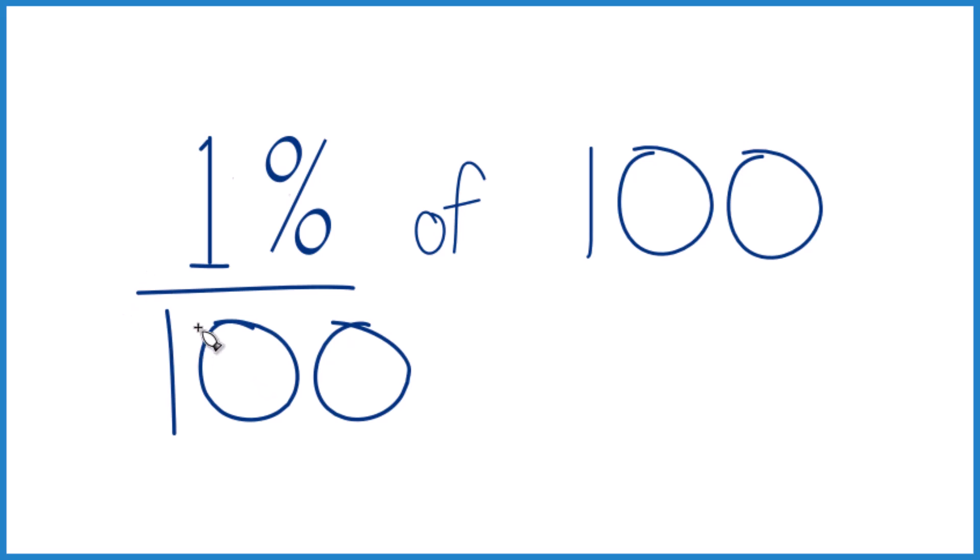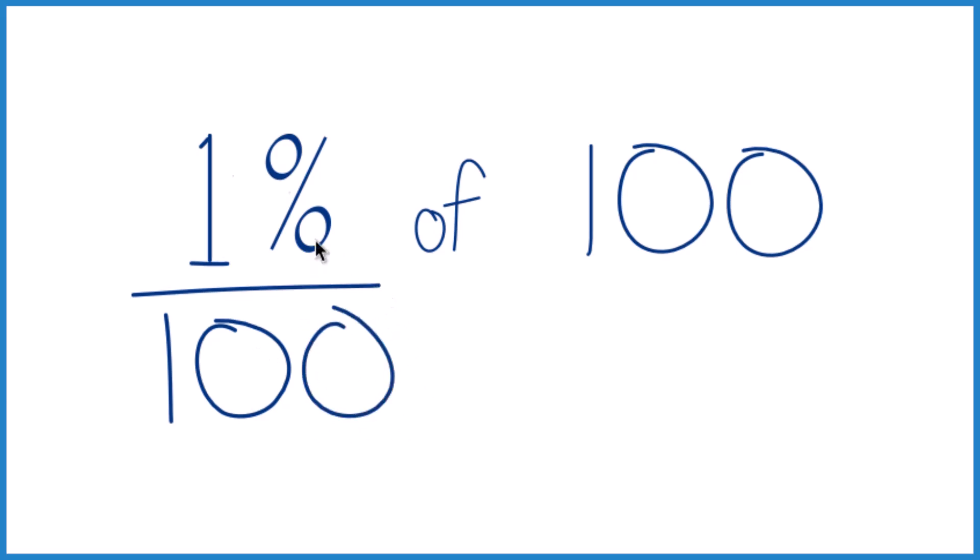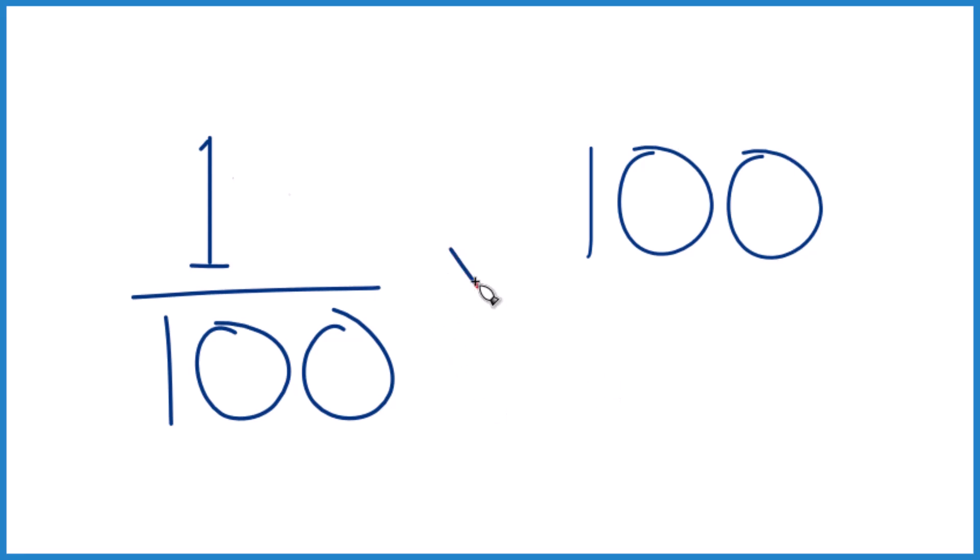Here's another way to think about it. So we said 1%, that's 1 out of 100. That's our percent. So let's get rid of that. And then of, we're just going to call that multiplication. So 1 over 100 times 100.